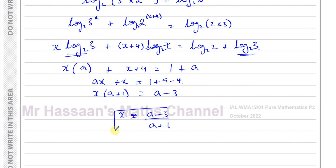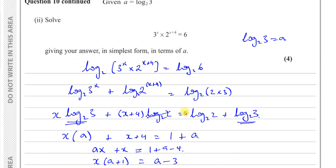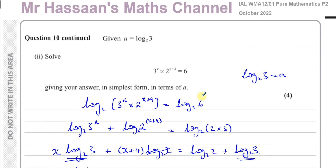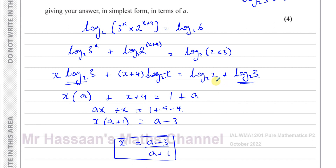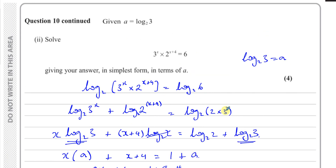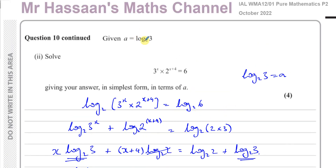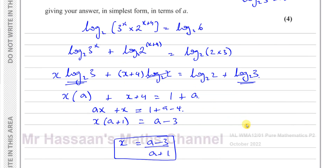There's the answer — x in terms of a. Solving the equation means finding what x is in terms of a, and that question is now complete. The key ideas were: using the laws of logarithms, understanding that log to the base of something of itself is 1, the addition law, the power law, and making sure to express everything in terms of log to the base 2 of 3, which we replace with a.